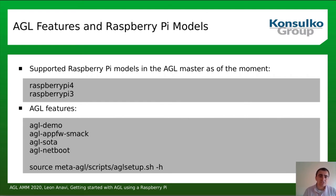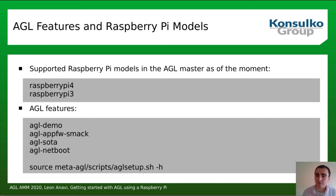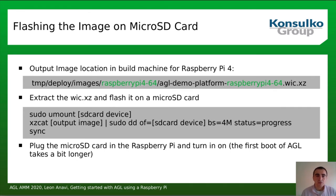Here are some of the AGL features: 'agl-demo', 'agl-appfw-smack' for security, 'agl-sota' for software-over-the-air updates, and 'agl-netboot' for network boot. If you run the AGL setup script with the help argument, you'll see a very long list of all supported machines — AGL runs on a lot of different hardware — as well as a long list of AGL features with a brief description of each.